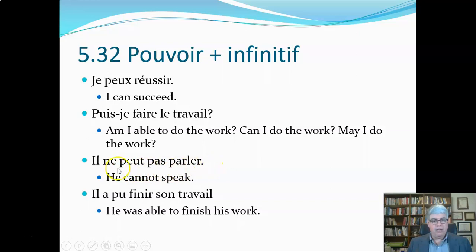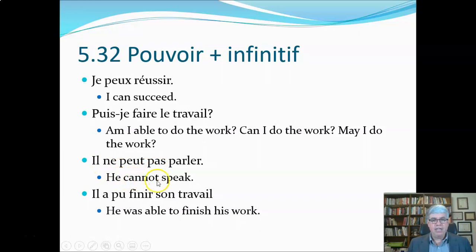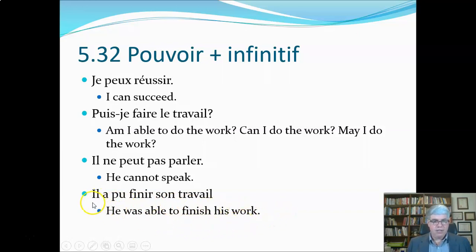Il ne peut pas parler — here we've got a negative phrase with ne in front of the conjugated verb and pas after it. So 'he can speak' becomes negated: 'he cannot speak.' Il a pu finir son travail — here we have pouvoir's past participle pu with the helping verb avoir. So 'he could finish his work' or 'he was able to finish his work.' The past tense of 'to be able to' is 'was able to'; the past tense of 'can' is 'could.' Note that 'he could finish his work' shouldn't be confused with the conditional mood, but we'll come back to that later.